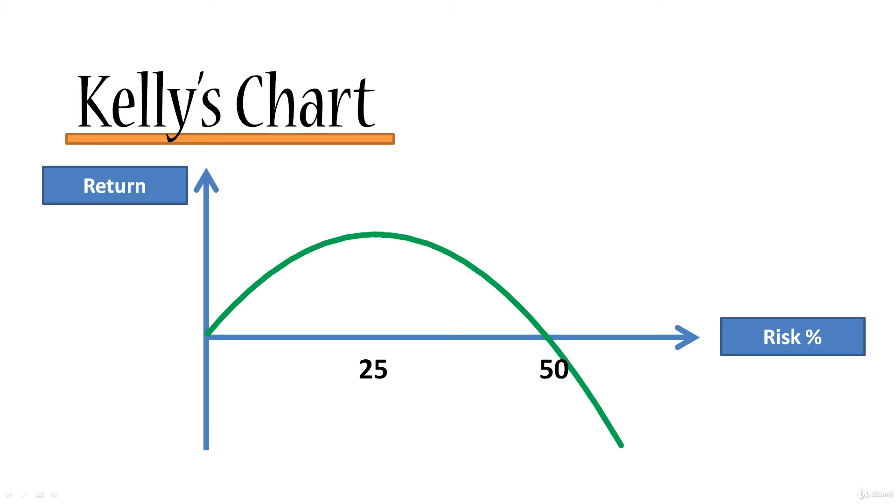This is what our Kelly chart for our particular example looks like. Our optimal outcome is at 25% risk. Our breakeven point is at 50% risk.